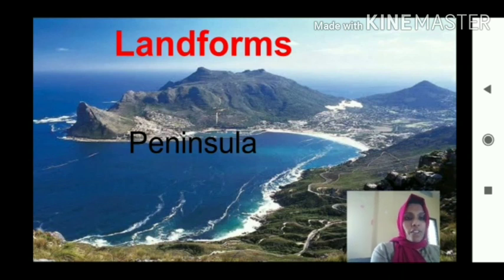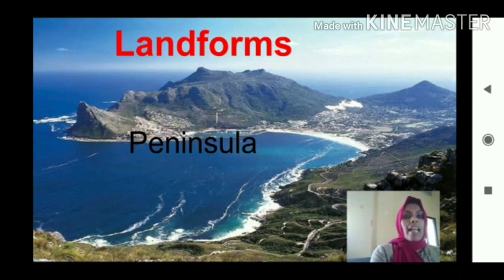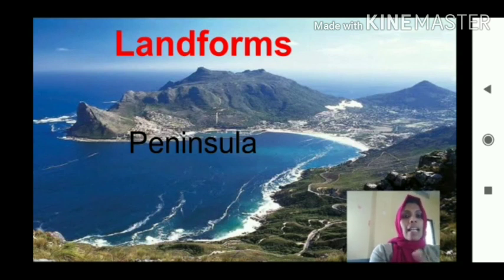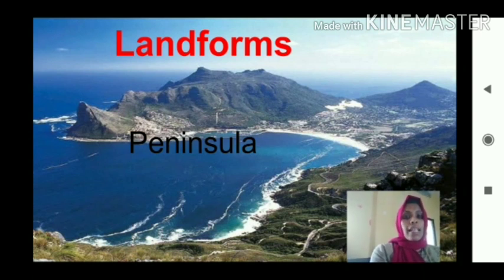Next type of landform is peninsula. What is the spelling of peninsula? P-E-N-I-N-S-U-L-A. Peninsula means three sides surrounded by water, one land area projects into the sea. That is known as peninsula. Is it clear?